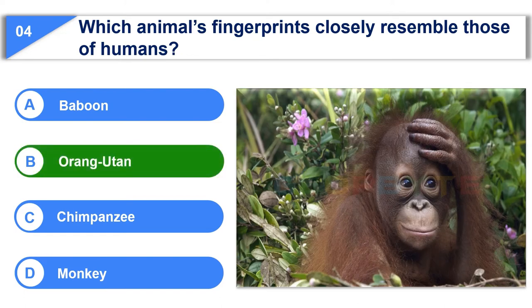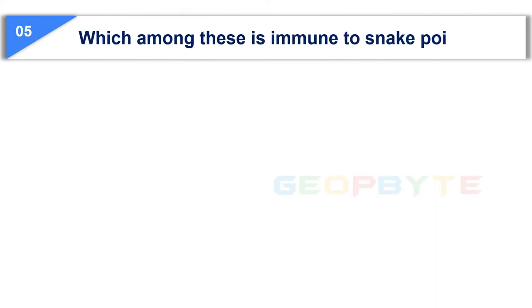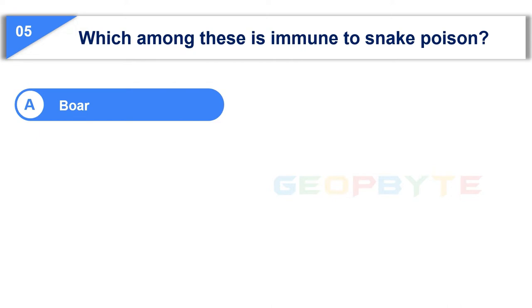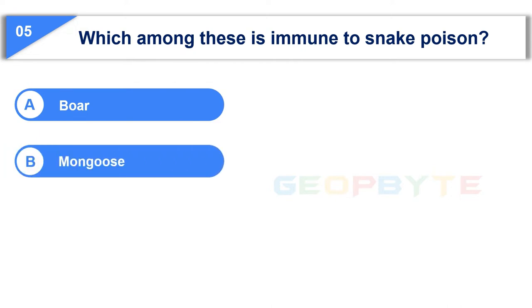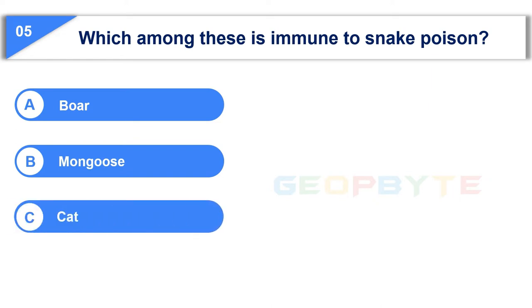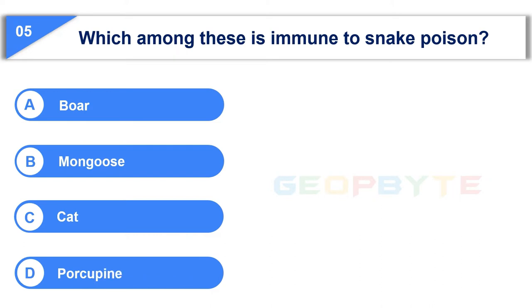The correct answer is Option B: Orang-Utan. The fifth question — Option A: Boar. Option B: Mongoose. Option C: Cat. Option D: Porcupine. Your time starts now.